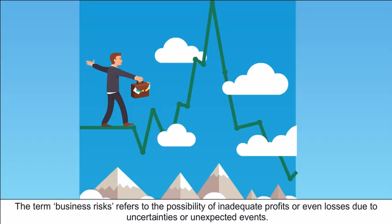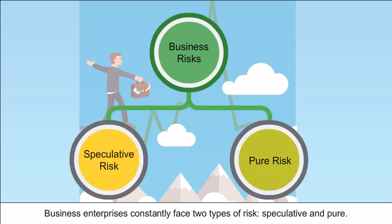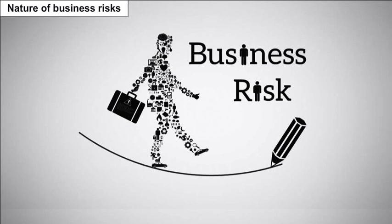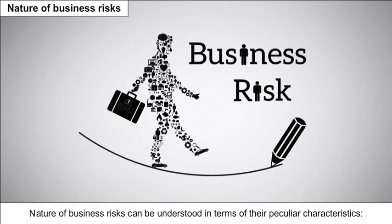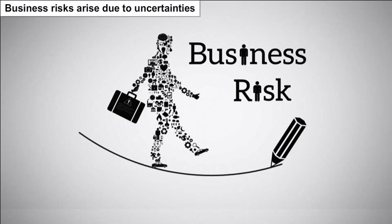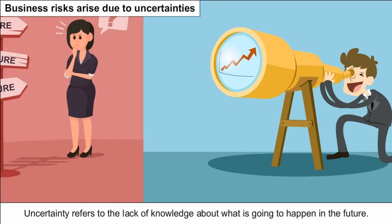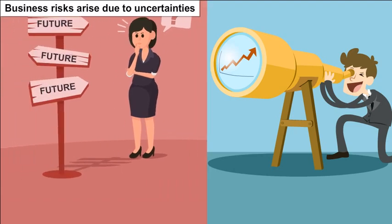The term business risks refers to the possibility of inadequate profits or even losses due to uncertainties or unexpected events. Business enterprises constantly face two types of risks: speculative and pure. The nature of business risks can be understood in terms of their peculiar characteristics. Business risks arise due to uncertainties — uncertainty refers to the lack of knowledge about what is going to happen in the future.